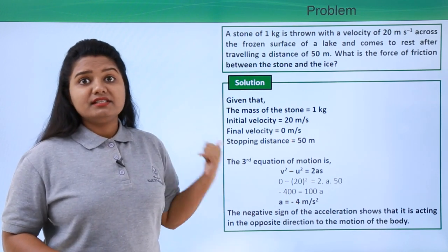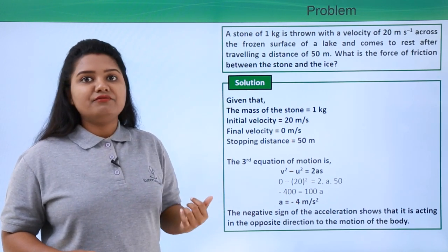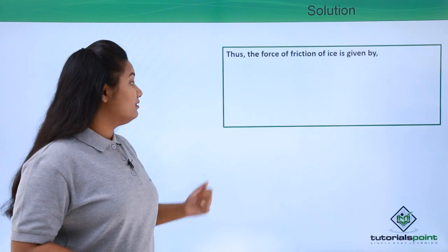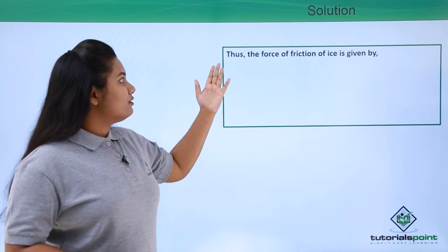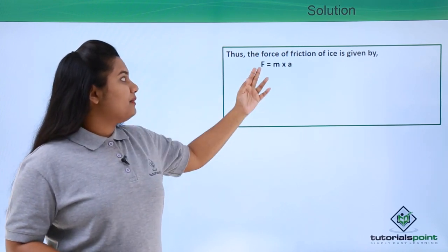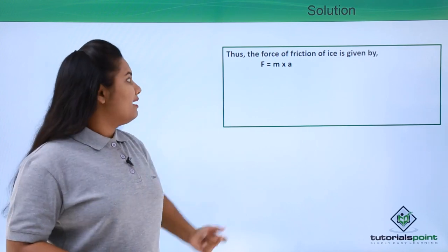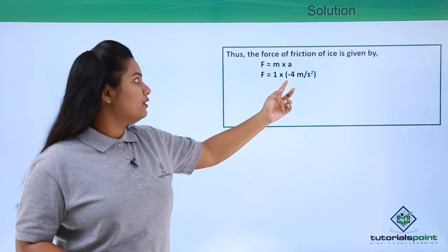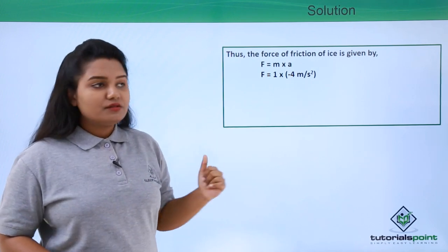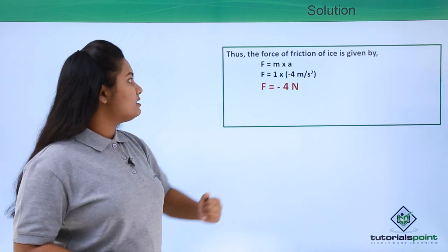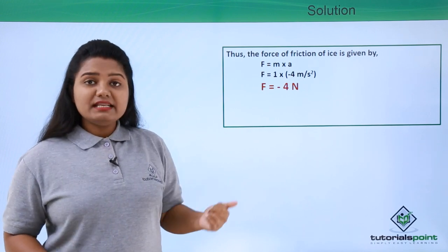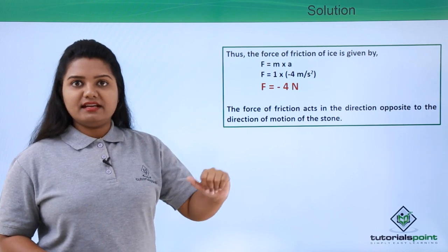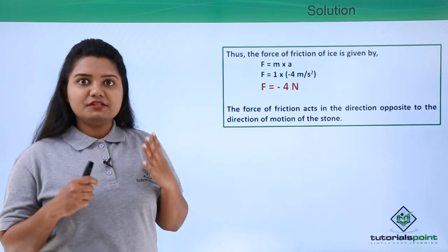Now that we have calculated the acceleration, it's time to find out the force of friction that has made this stone to stop. The force of friction is given by F = m × a. Mass is 1 kg and the acceleration we found to be -4 meters per second squared. So the force is found to be -4 newton. The force is again negative, which means that the force is acting in a direction opposite to the motion of the stone.